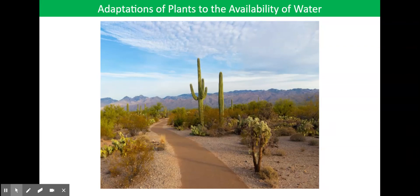This video tutorial is about the adaptations of plants to the availability of water. For most plants living on land, access to water can be a problem. As you learnt in previous topics, water is lost by transpiration because plants exchange gases with the atmosphere via their stomata.